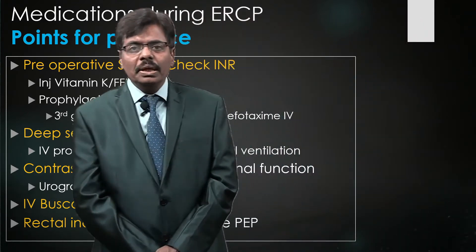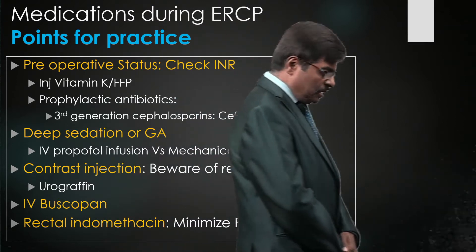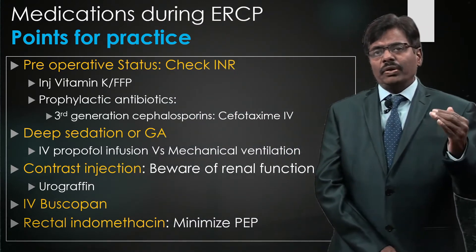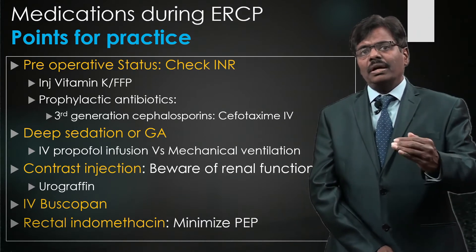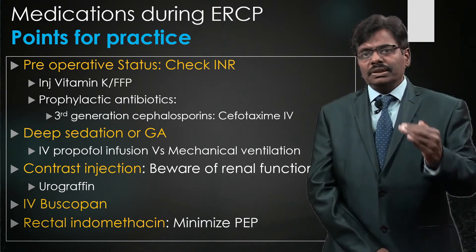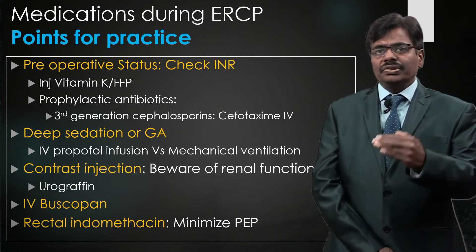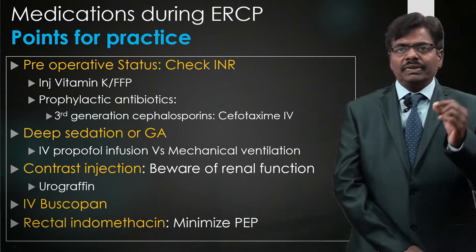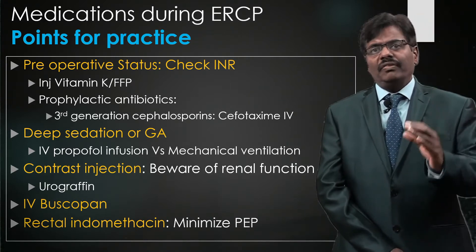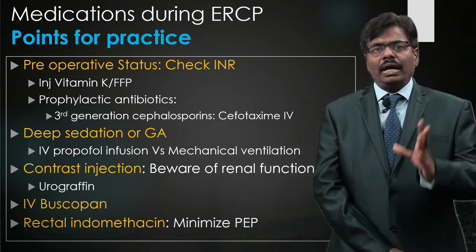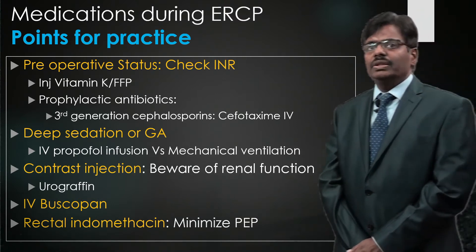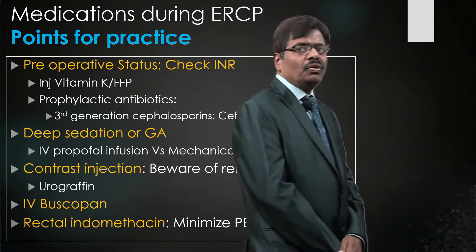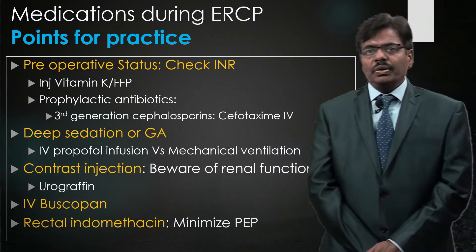A short general anesthesia with the tube in place gives you a lot of comfort to proceed with cannulation, and your cannulation rate will definitely be better at the beginning. Regarding contrast — the same contrast used for CT — ensure the patient's creatinine is not too high. My recommendation is a 1:1 dilution of the contrast to minimize the amount used.